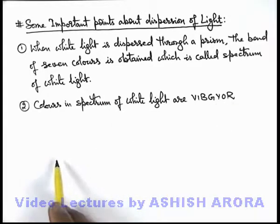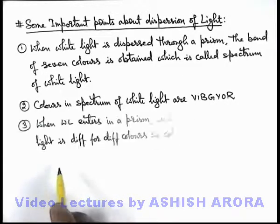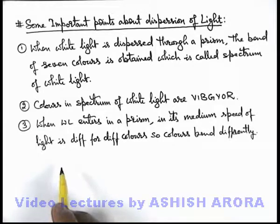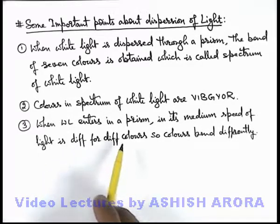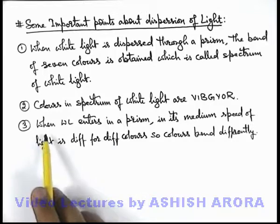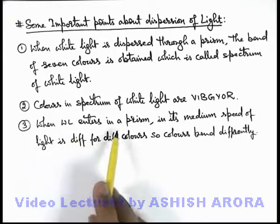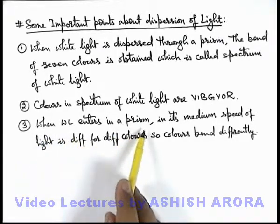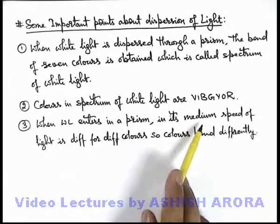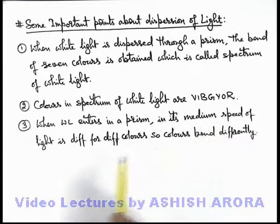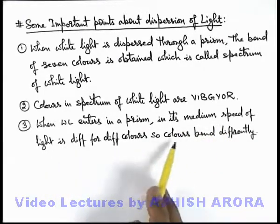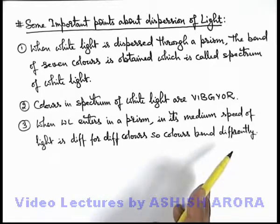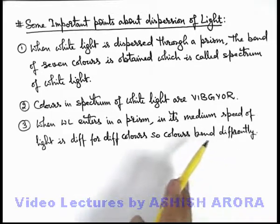The next point about dispersion is about the dispersion of white light through a prism. When white light enters a prism, in the medium of the prism the speed of light is different for different colors, so different colors bend differently.